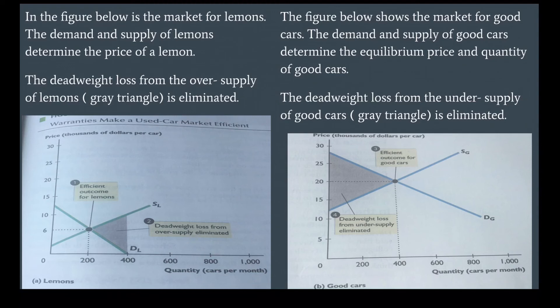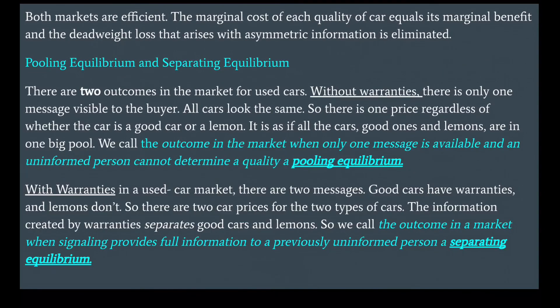The figure shows the market for lemons: demand and supply of lemons determine the price, and the deadweight loss from the oversupply of lemons — the gray triangle — is eliminated. The figure also shows the market for good cars: demand and supply of good cars determine the equilibrium price and quantity, and the deadweight loss from the undersupply of good cars — the gray triangle — is also eliminated. Both markets are efficient: the marginal cost of each quality of car equals its marginal benefit, and the deadweight loss that arises with asymmetric information is eliminated.